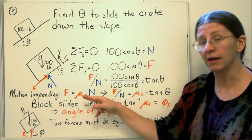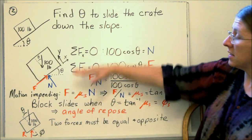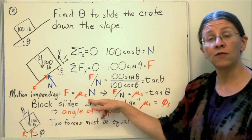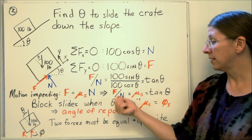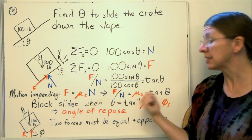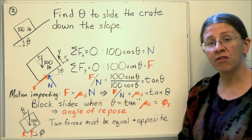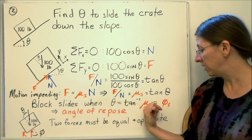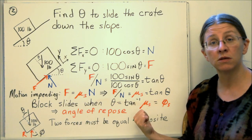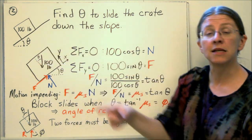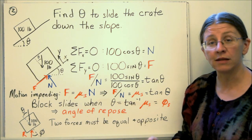Divide one by the other, you can get f over n equals tan θ. Now the nice thing about this is that when I assume that motion is impending, this is what I want to know. This does not assume motion is impending, this does. If I put in f equals μs times n, I get f over n is μs. That's tan θ. The block slides when θ is the arc tan of μs. Well that's your φ, φs, that's your angle of repose. The block is going to slide when this angle, θ, ends up being φs, the angle of repose.